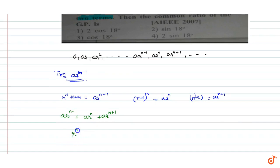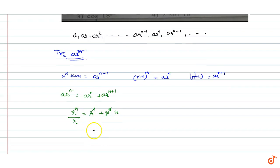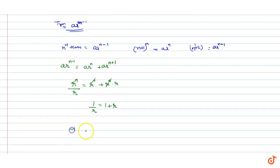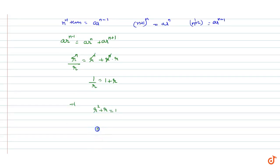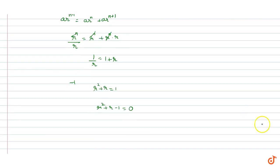Dividing throughout by a, we get r^n / r = r^n + r^n · r. Cancelling r^n, we get 1/r = 1 + r. Cross multiplying, r² + r = 1, which gives us r² + r - 1 = 0.